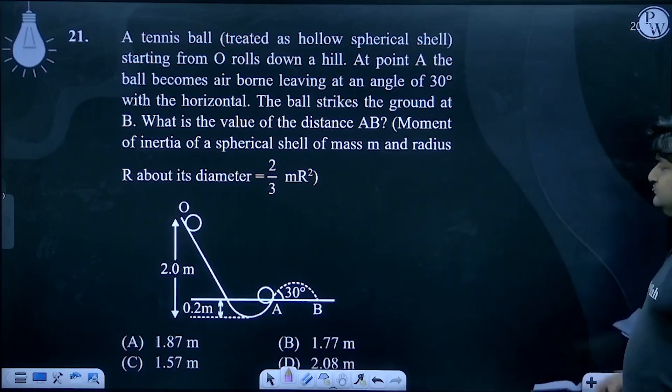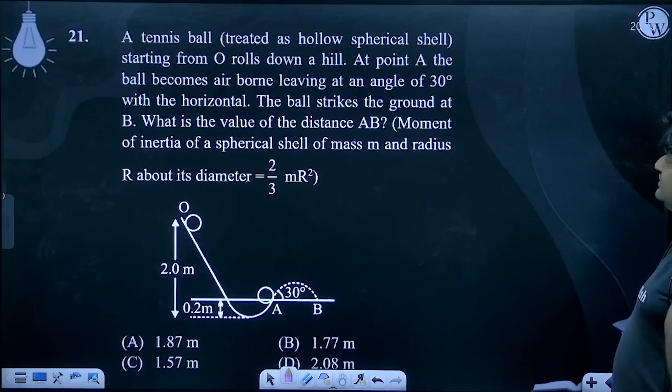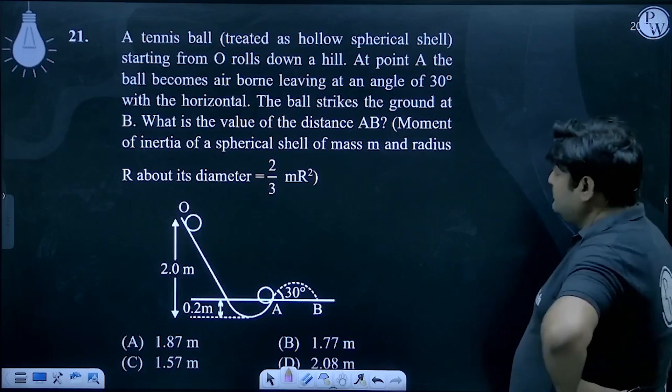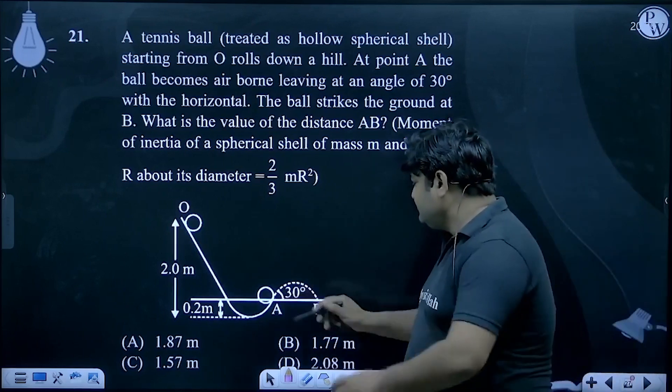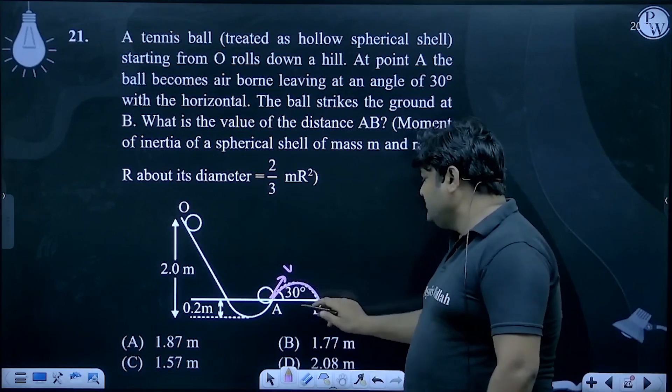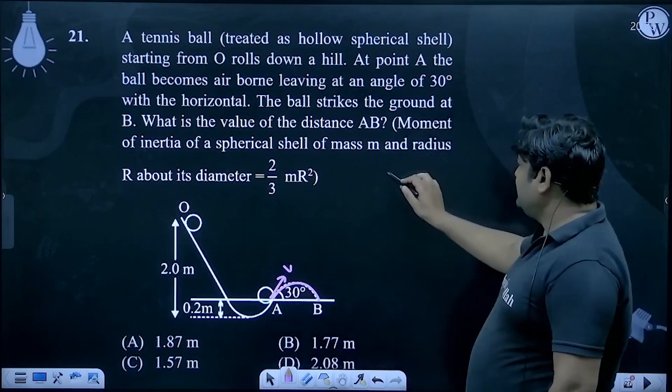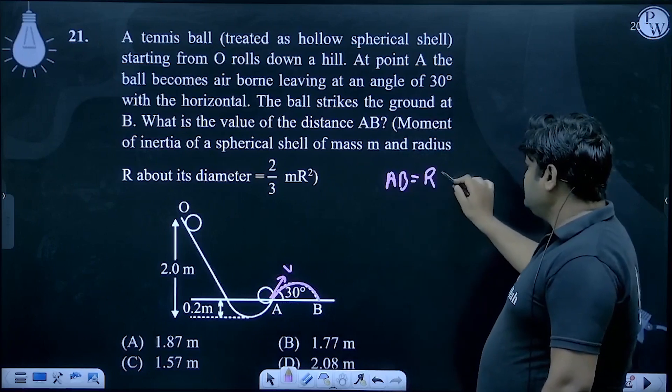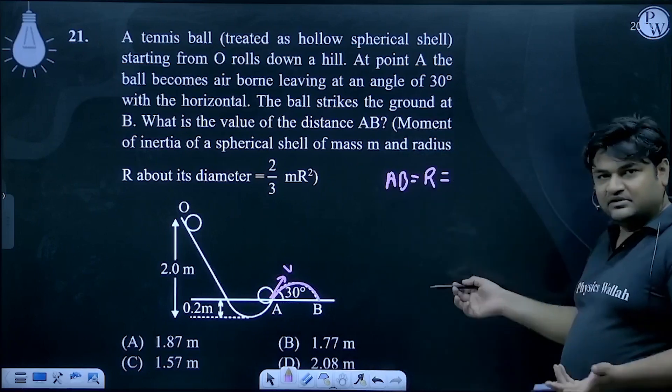Okay. Tennis ball is a hollow spherical shell. It rolls from O to point A. From here it becomes airborne. It will go from A to B. The distance AB is the range of the projectile, basically.